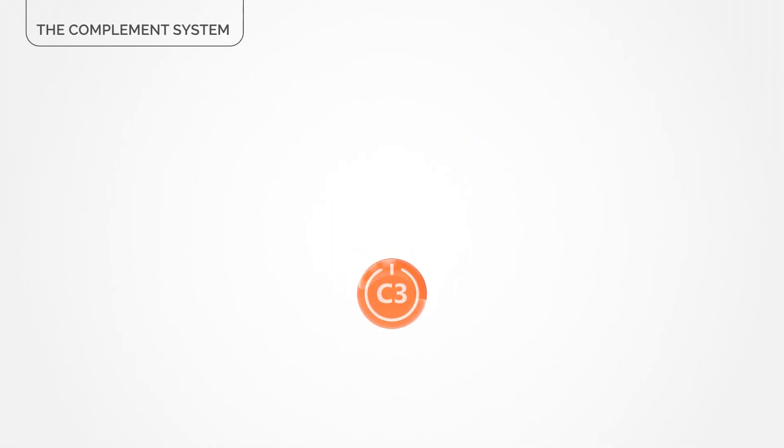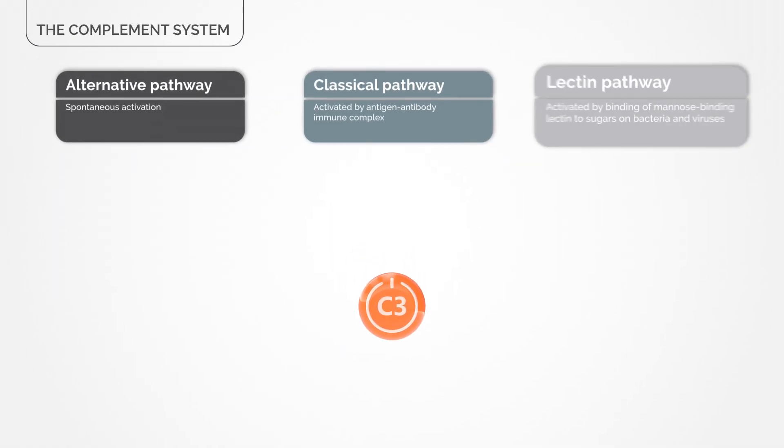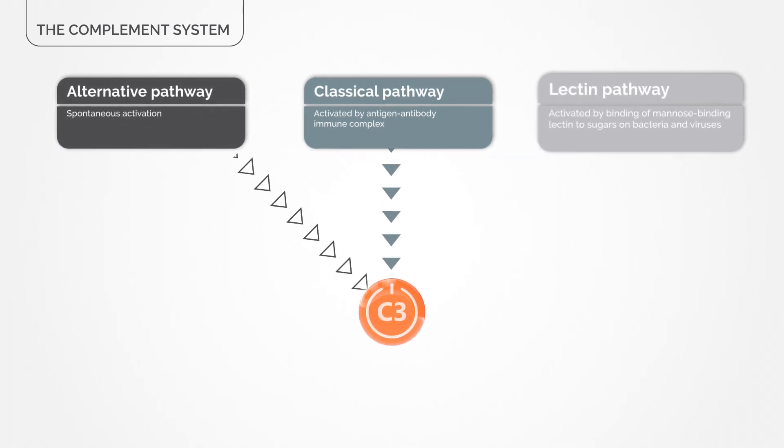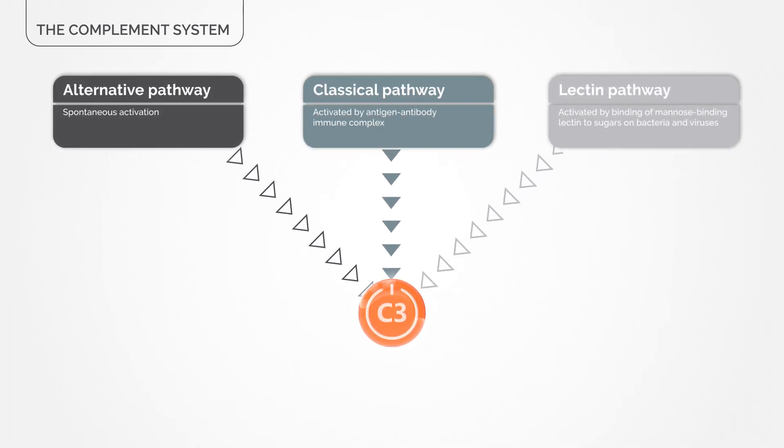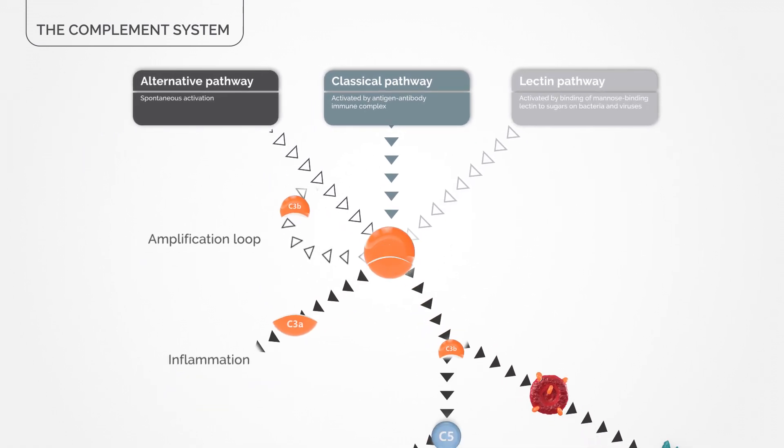The complement system may be activated by three different pathways: the alternative, classical, and lectin pathways that all run through complement C3, the central protein in the cascade.